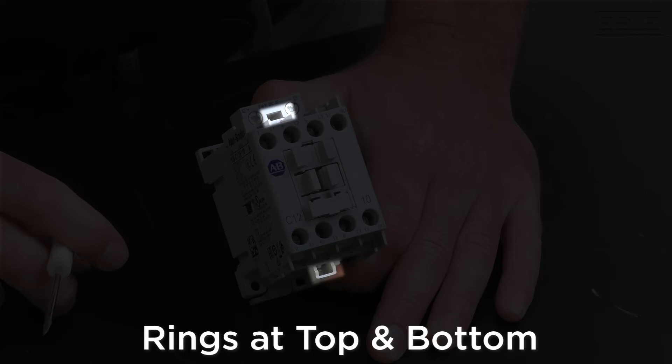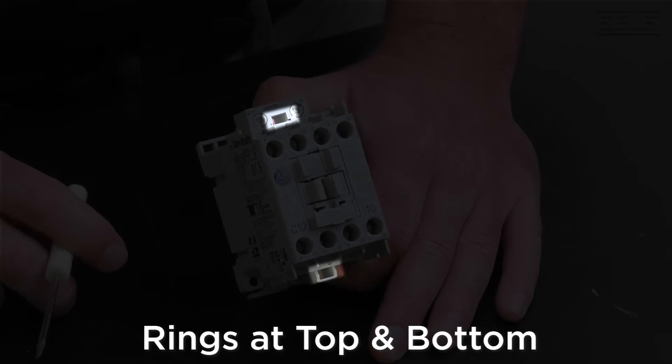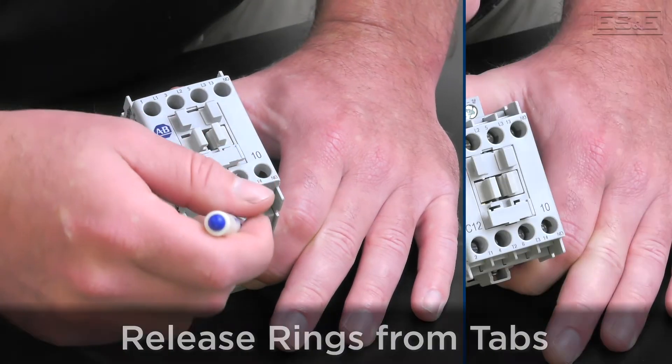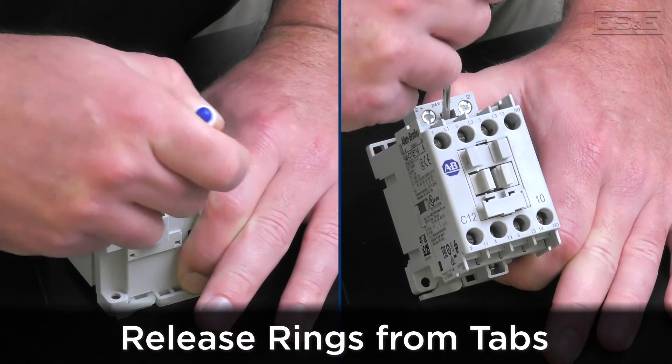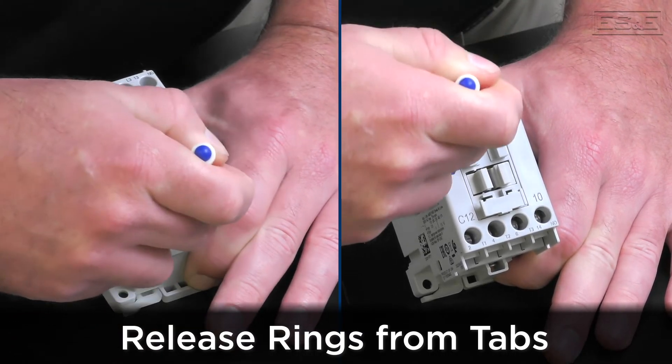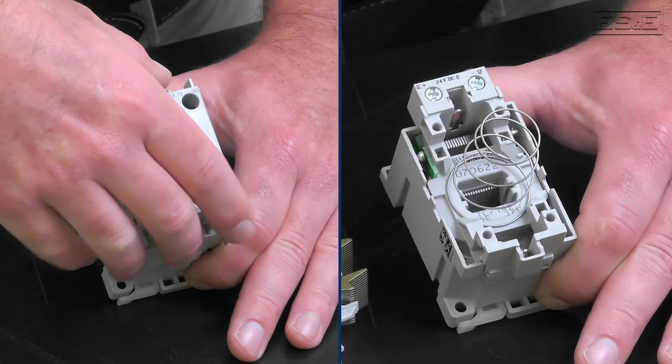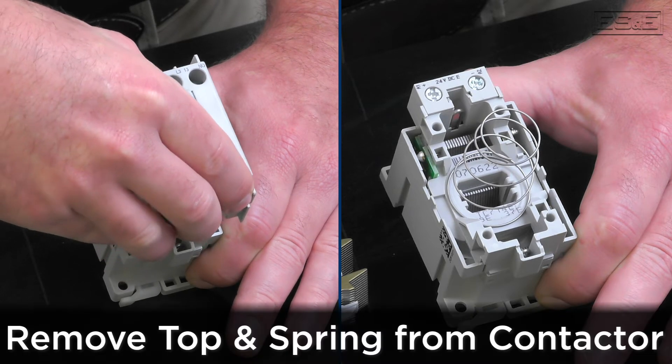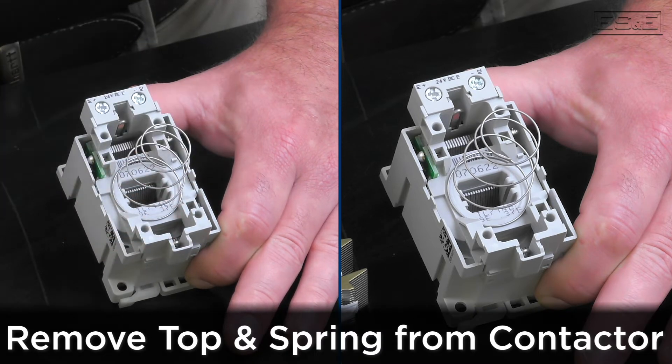Second, note the two rings on the top and the bottom that hold the contactor together. Now using a small screwdriver, carefully release those rings off the plastic tabs. Once those tabs are released, carefully lift the top portion of the contactor off.